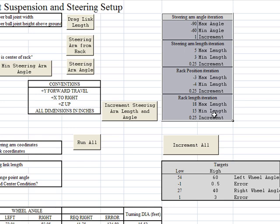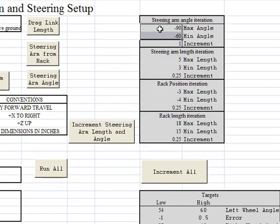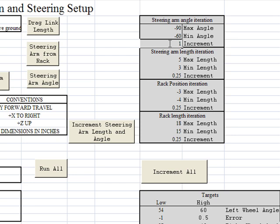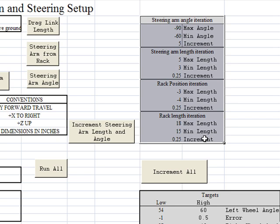This gray box specifies how you want your steering arms and your racks to move. You can clearly see we want our steering arm angles to go from negative 90 to negative 60 degrees — about 30 degrees — and we want to do that in 1 degree increments. We could specify this at 2 or 5 degrees when we usually start, when we don't know where an optimal location is.